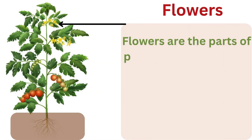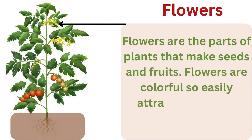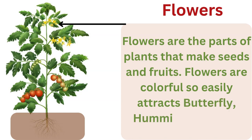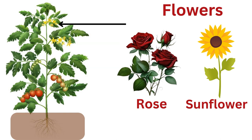Flowers are the parts of plants that make seeds and fruits. Flowers are colorful, so they easily attract butterflies, hummingbirds, and bees. Some flowers we like are rose and sunflower.